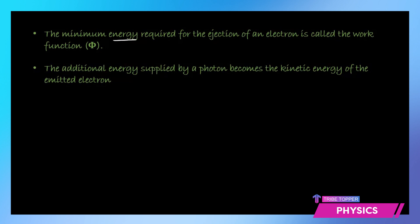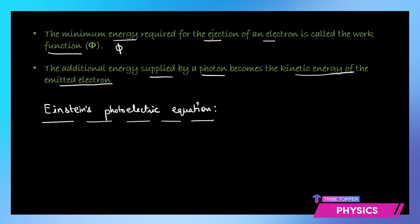The minimum energy required for the ejection of an electron is called the work function phi. This is the term used specifically for the threshold energy requirement. Any additional energy supplied by a photon becomes the kinetic energy of the emitted electron. So if the energy of the photon is much higher than the work function, that extra energy will be added as the kinetic energy of the electron.